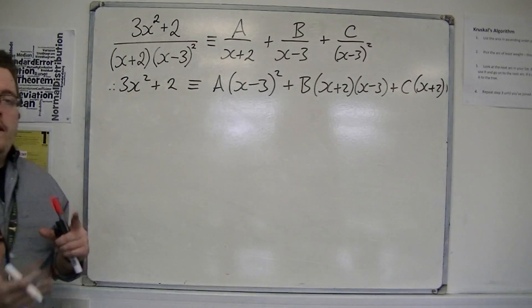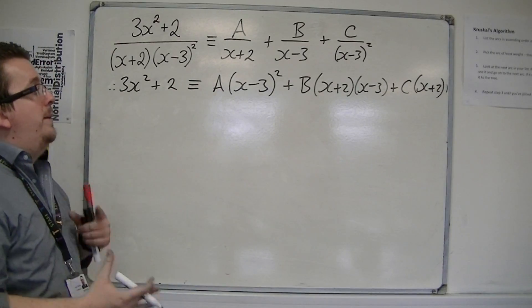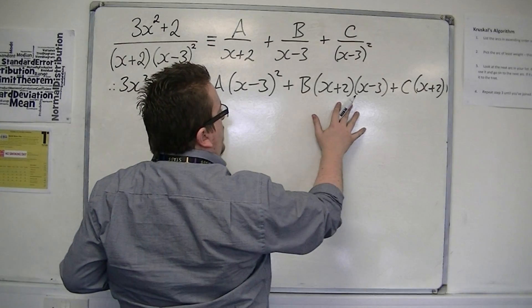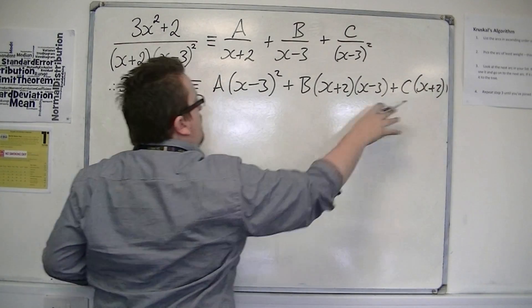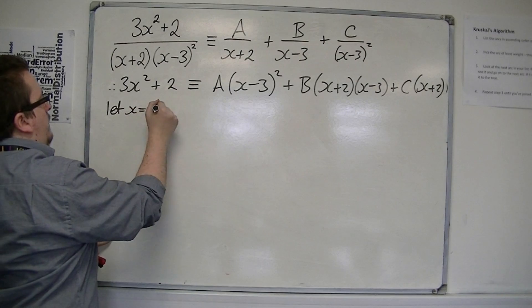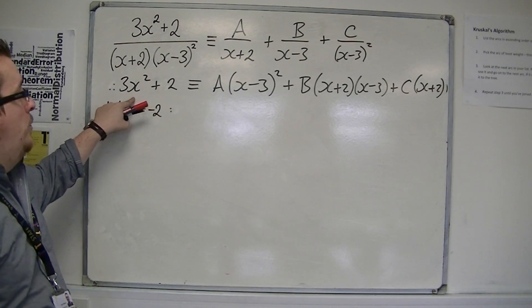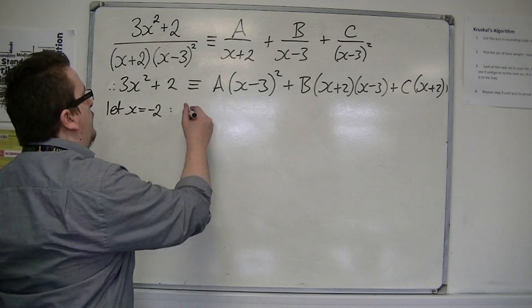If I now choose values of x that are going to eliminate brackets, I'm going to choose x is minus 2, because that will get rid of this bracket and that bracket. So, I've got minus 2 squared is 4, 3 times 4 is 12, plus 2 is 14.